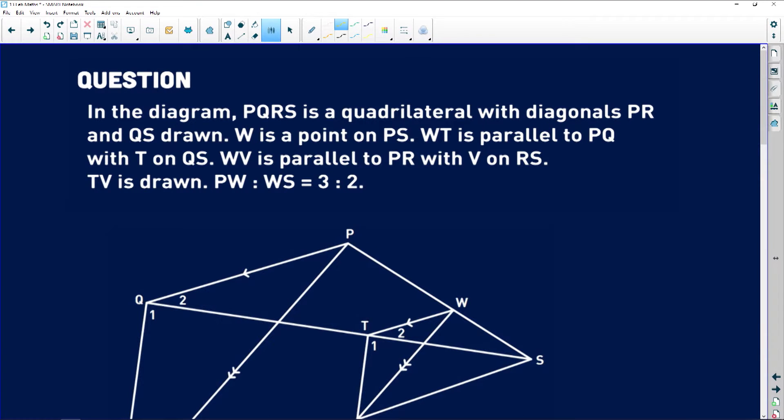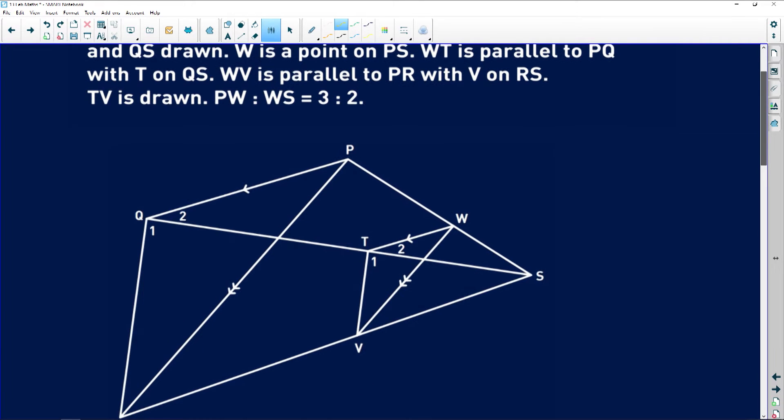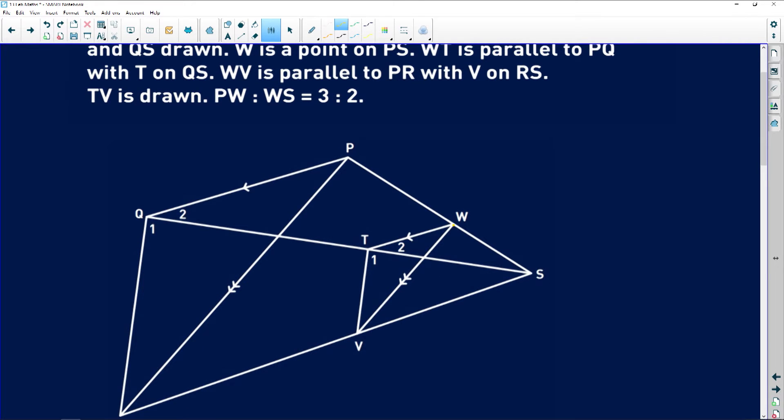It says in the diagram PQRS is a quadrilateral with diagonals PR and QS drawn. W is a point on PS. That's just saying that they've randomly plotted a point along the side here and it sits at W. WT is parallel to PQ, very important with T on QS.